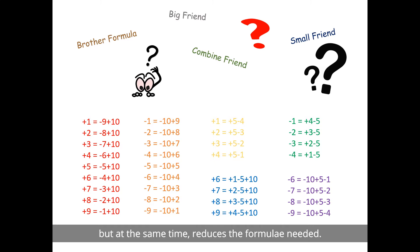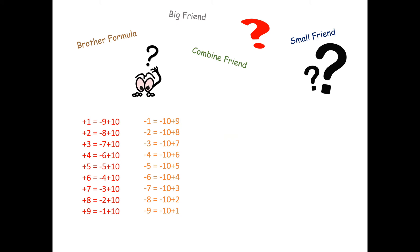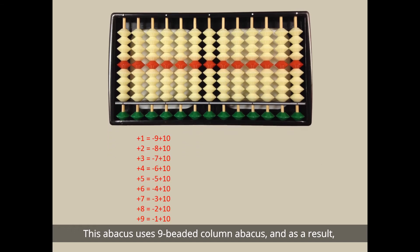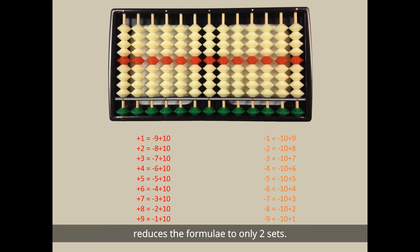And voila, 3G abacus was born. This abacus uses nine beaded column abacus and as a result reduces the formulae to only two sets. Ooh, this looks easier, just like the math carrying over matter I learned in school.